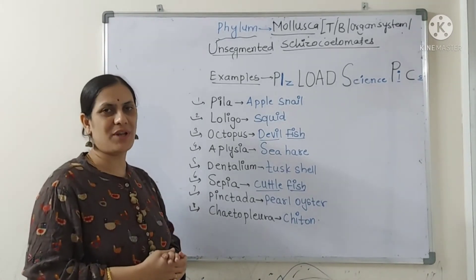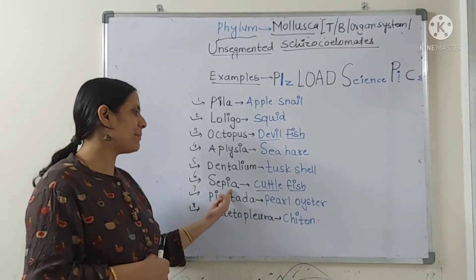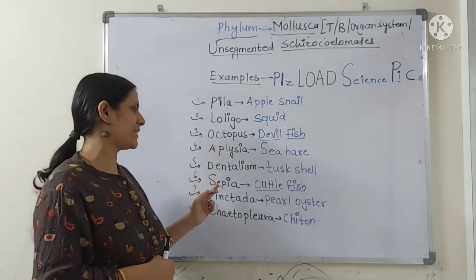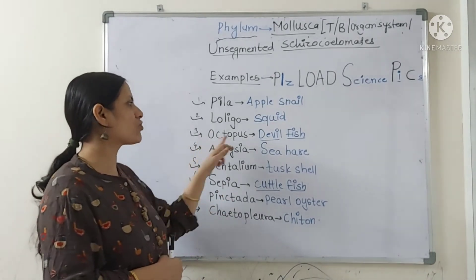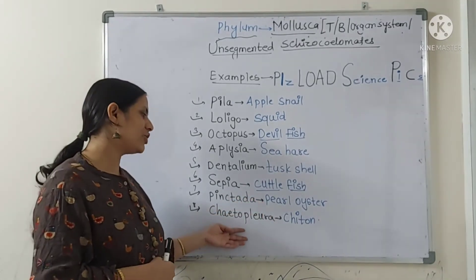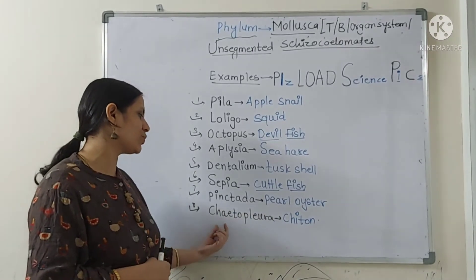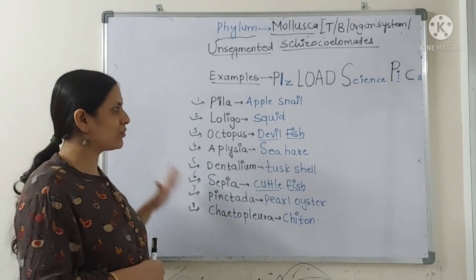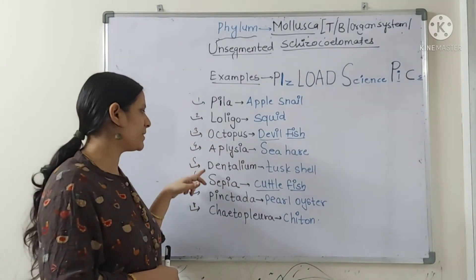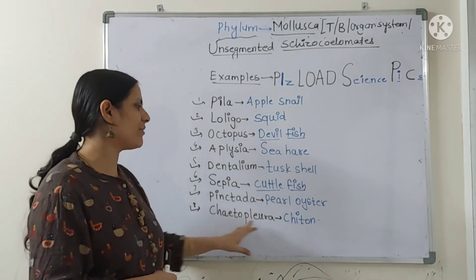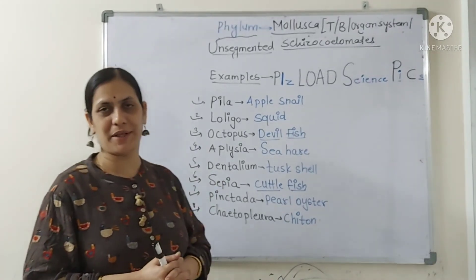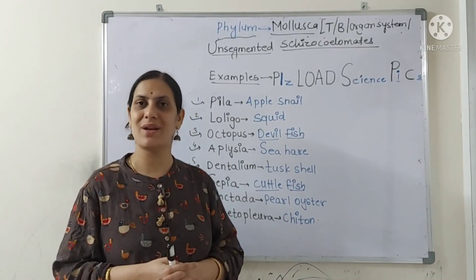Dentalium is the tusk shell — the shell looks like the tusk of an elephant. Sepia is the cuttlefish. Octopus and sepia are like fish — octopus devil fish and sepia cuttlefish. Then P for Pinctada — easy to remember because it is a pearl-forming oyster. And Chaetopleura, also known as chiton — use 'Ch' to remember it. So with this trick all eight mollusca examples are covered: Pila, Loligo, Octopus, Dentalium, Sepia, Pinctada, and Chiton. Loligo is the squid. Mollusca becomes very easy with this trick!